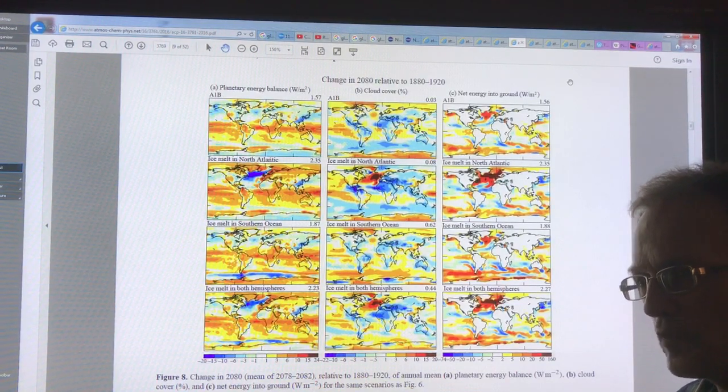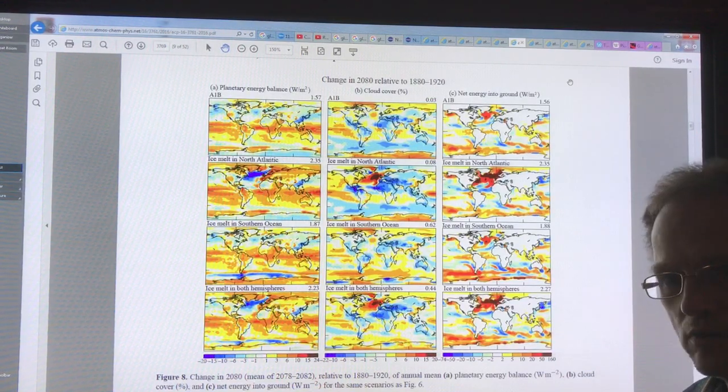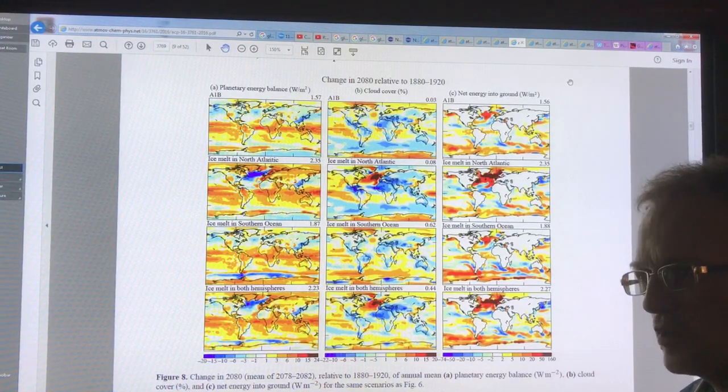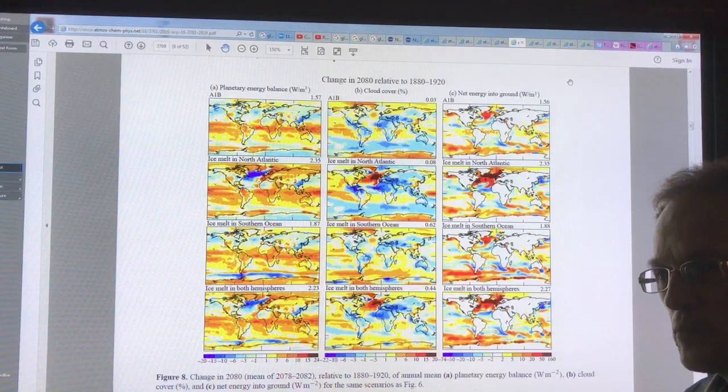If we get a 7 meter sea level rise by 2070, I would expect about 3.5 meters from Antarctica and 3.5 from Greenland. The part from Antarctica—probably most of it, I'd say over half, would be from the West Antarctic Ice Sheet.